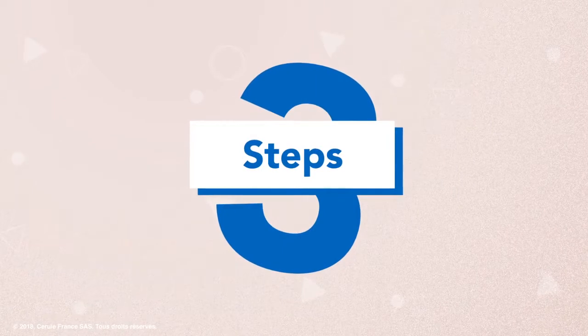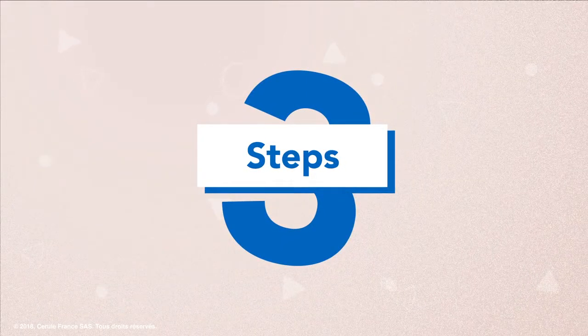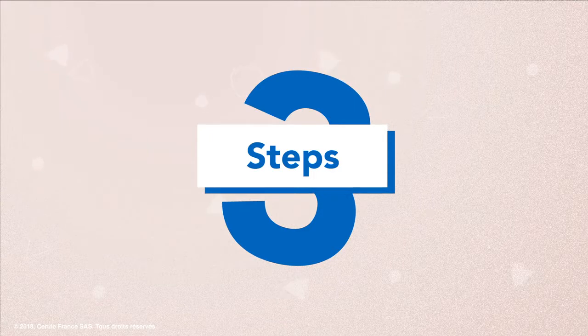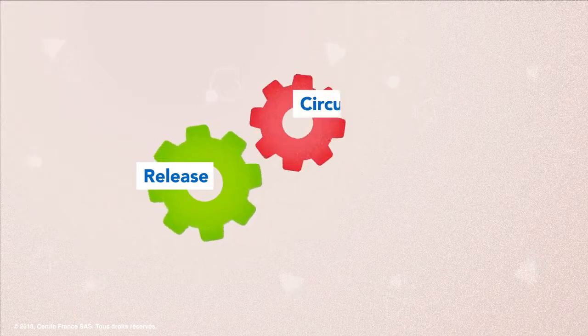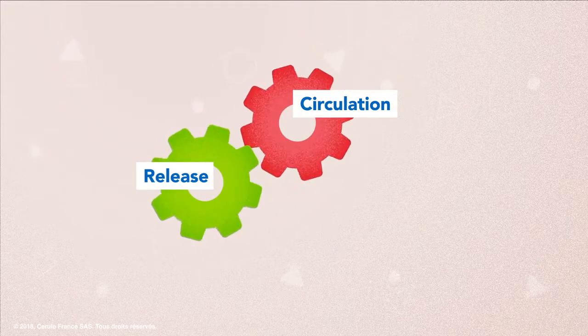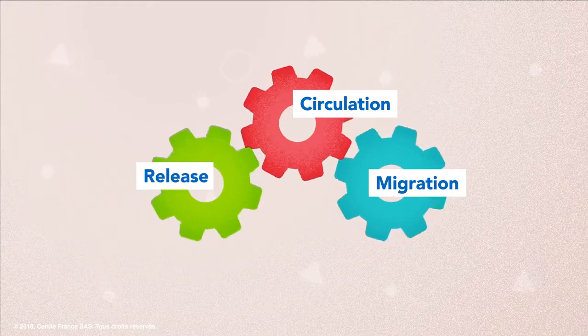In summary, there are three complementary and essential steps necessary for repair and renewal. One, the release of stem cells from the bone marrow. Two, stem cell circulation in the blood. Three, migration into the affected tissue.